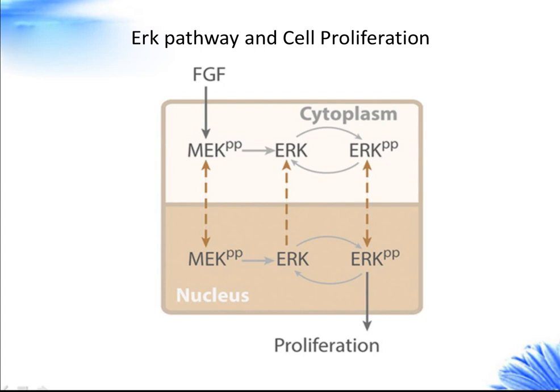CREB (cAMP response element binding protein) is a cellular transcription factor that can enhance gene transcription by more than 10-fold. C-FOS is a 380 amino acid protein with a basic leucine zipper region for dimerization and DNA binding, and a transactivation domain at the C-terminus; it is involved in important cellular events including cell proliferation, differentiation, and survival. Additionally, ERK1/2 can activate CDC25 protein, which activates cyclin-dependent kinases by removing phosphate from residues in the CDK active site; CDC25 controls the transitions from G1 to S phase and G2 to M phase.